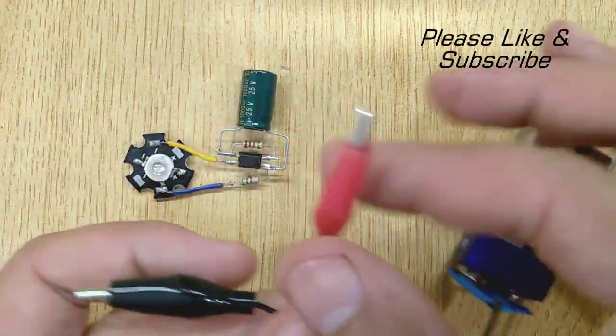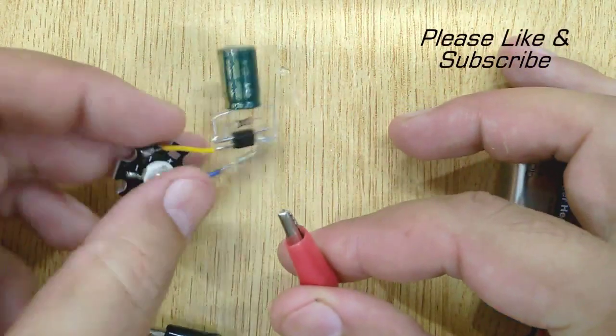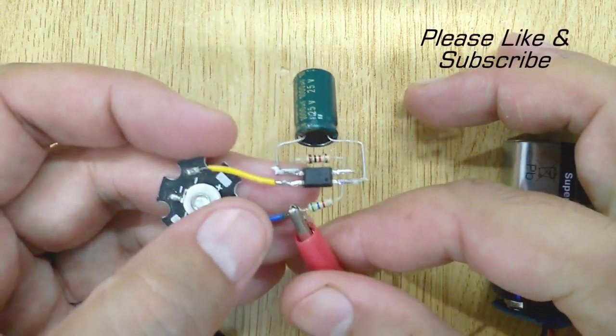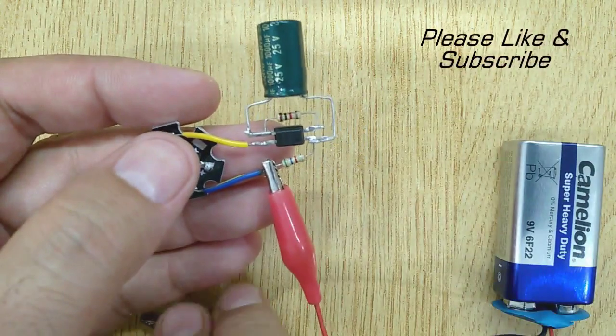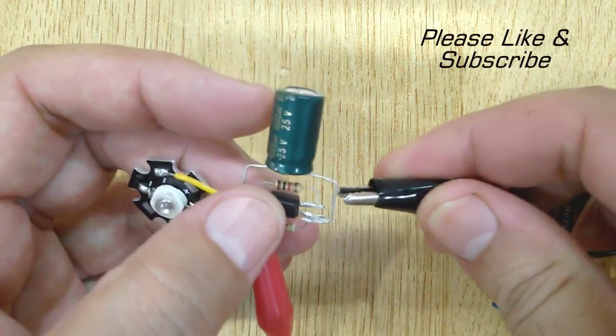Now connect the positive terminal of 9 volt battery with the positive pin of LED and the negative pin of 9 volt battery with the second pin of PC817.